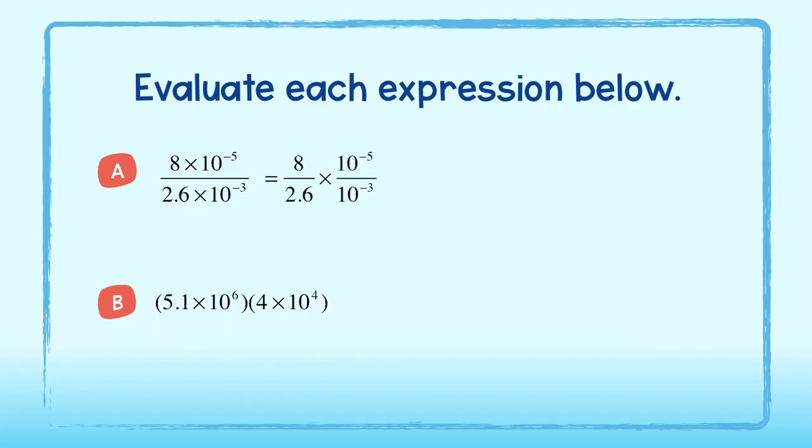We can rewrite part A like so. 8 divided by 2.6 gives us this decimal. Let's round to the nearest tenth. If you rounded as something different, that's okay too. Now the quotient rule tells us to subtract exponents to get a final answer of 3.1 times 10 to the negative second. Or, written in standard notation, 0.031.